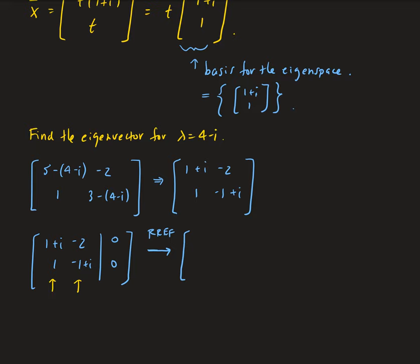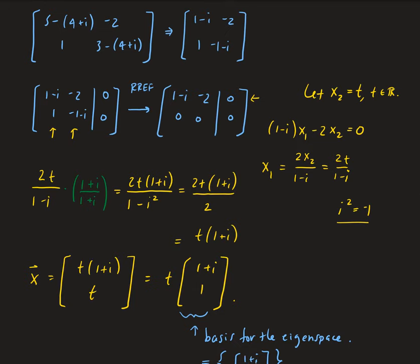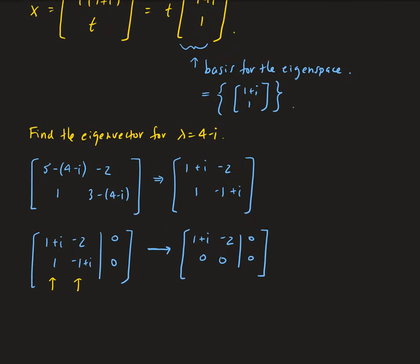When we do the row reduction on this, we get one plus i, negative two, zero, zero. Technically, this is row echelon form rather than reduced row echelon form — we could divide by one plus i to get RREF, but it doesn't really matter at this stage.